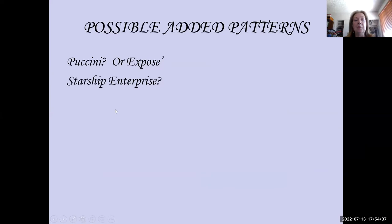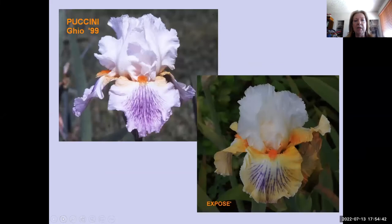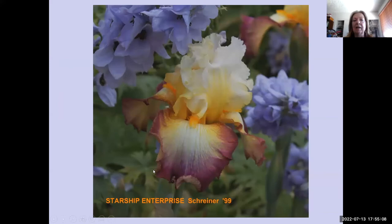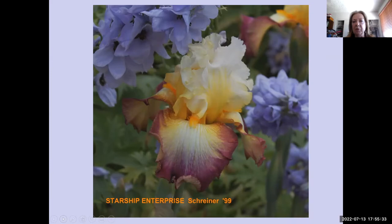Possible added patterns: when Puccini and Exposé came out, they were different — but what do you call them? It's similar to the Luminata pattern on the falls, a kind of wash of color, and no one has come up with a name beyond just calling it 'the Puccini pattern.' Starship Enterprise also seemed to look very different than other patterns — you could consider it a blend because it's got more than two colors on the falls. When you see new flowers, you recognize the familiarity of the color pattern even if you can't name it.